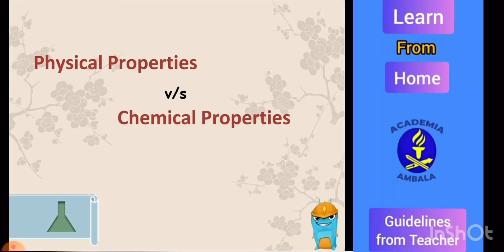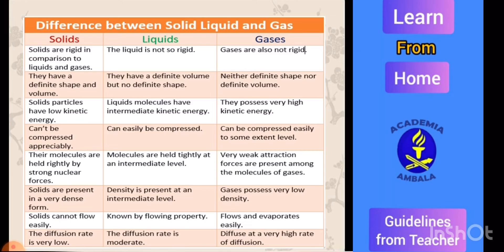Comparison of physical properties versus chemical properties. First is difference between solid, liquid, and gases. Solids are rigid as compared to liquids and gases. In comparison to solids, liquids are not too much rigid, but gases are also not rigid. In case of solids, they have definite shape and definite volume, whereas liquids have definite volume but not definite shape. In case of gases, they have neither definite shape nor definite volume.